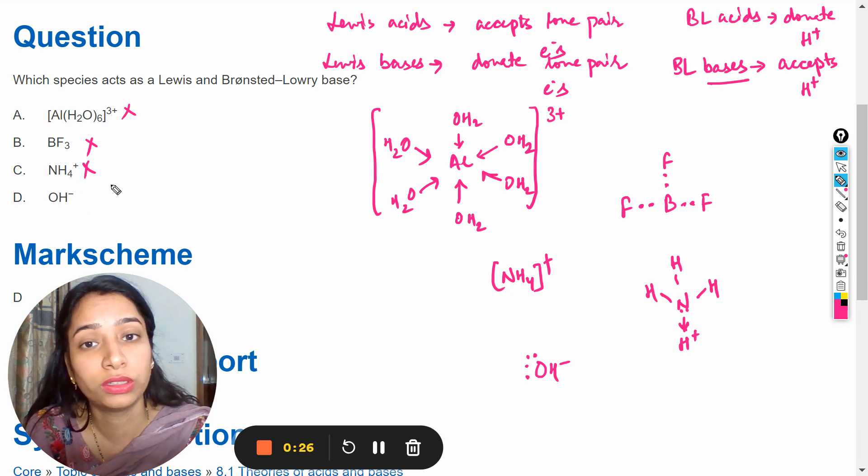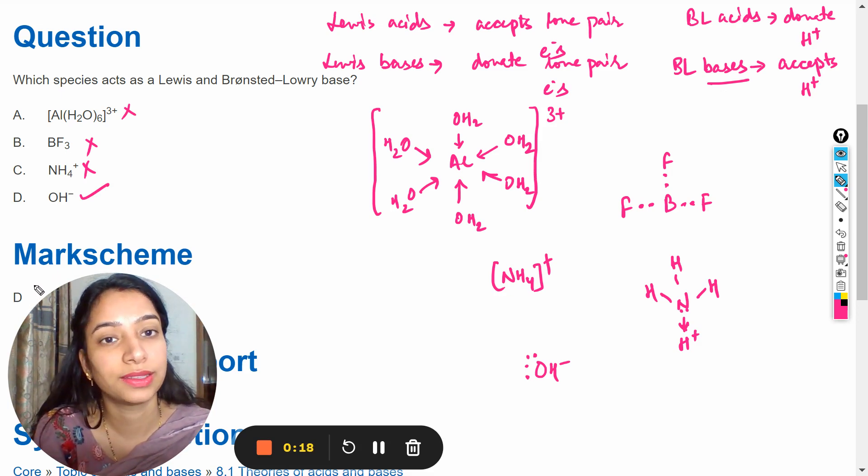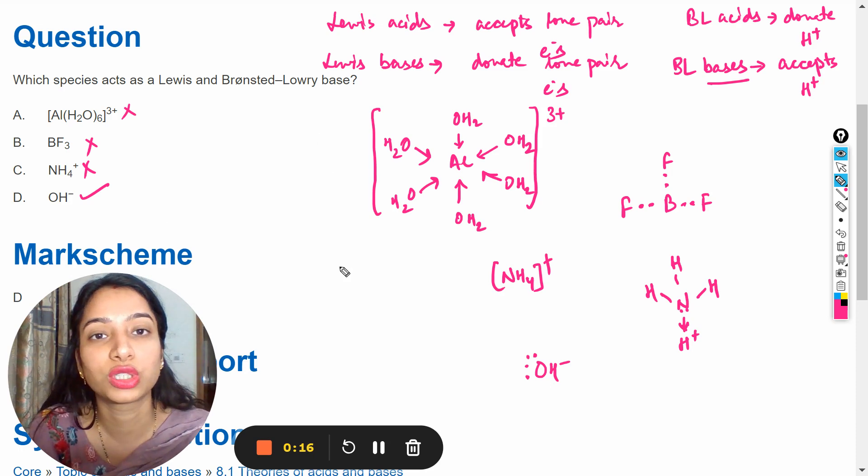So it can act as both Lewis base and Bronsted-Lowry base. So answer should be D option. You can see here mark scheme also shows that D option is right. So this is the solution of this question.